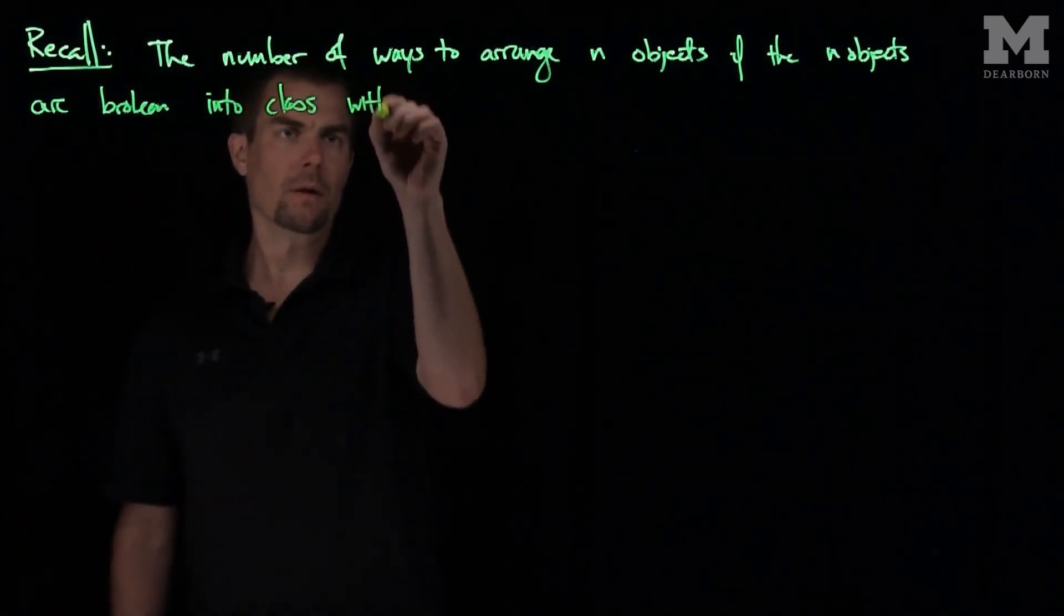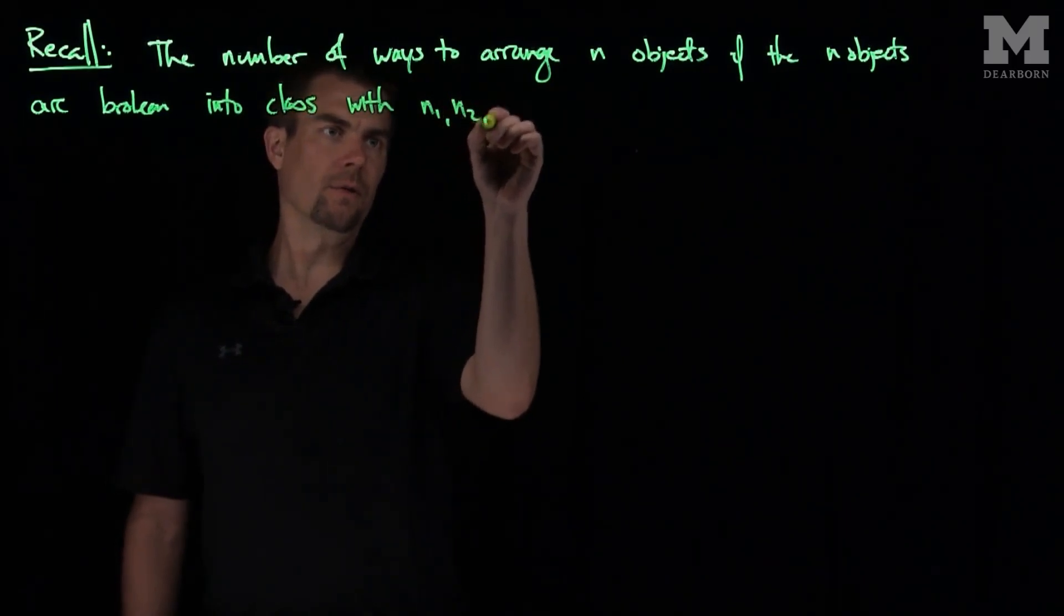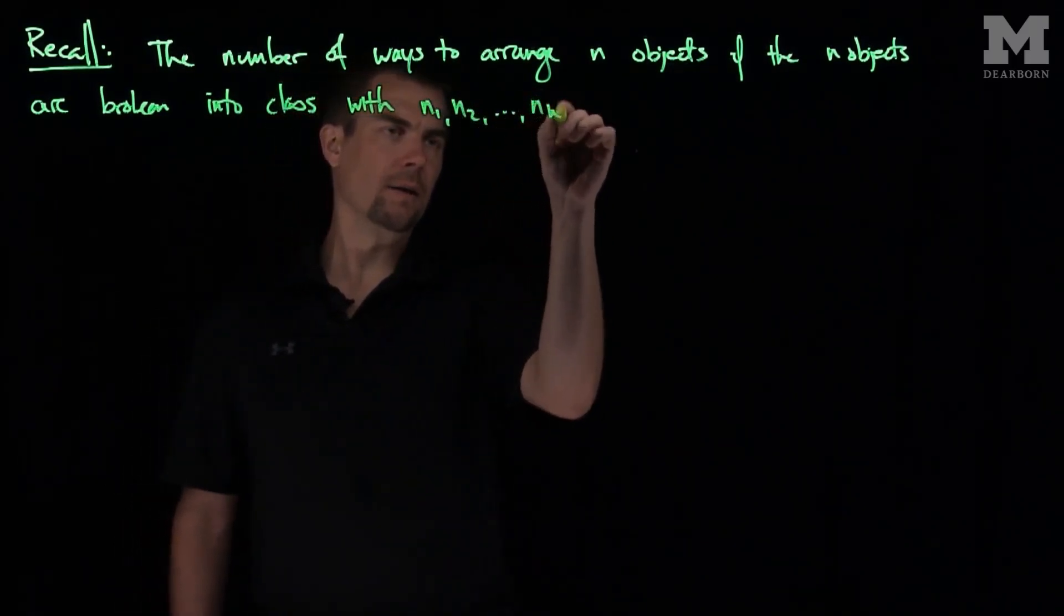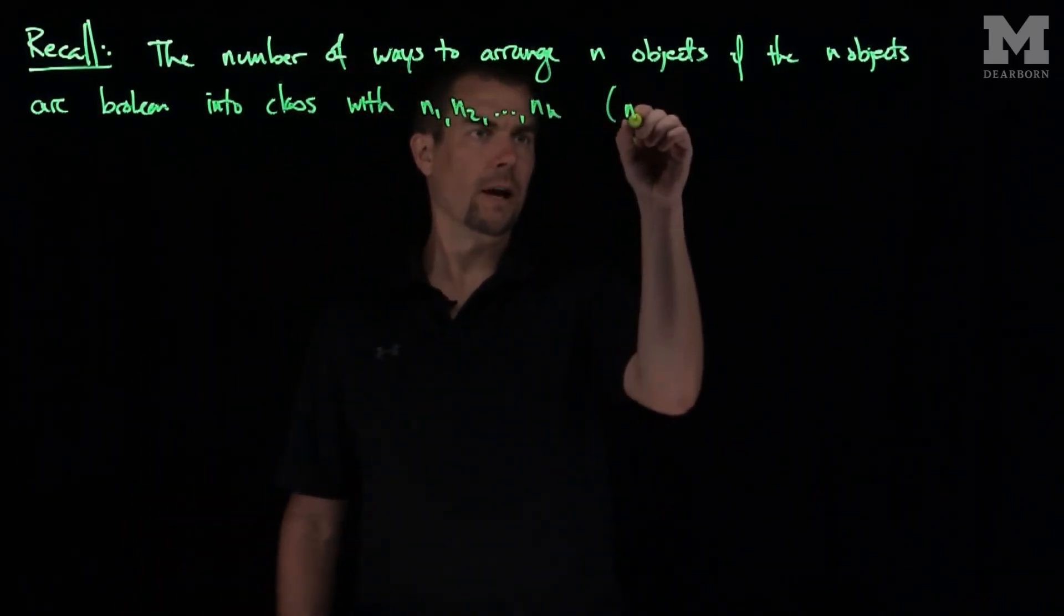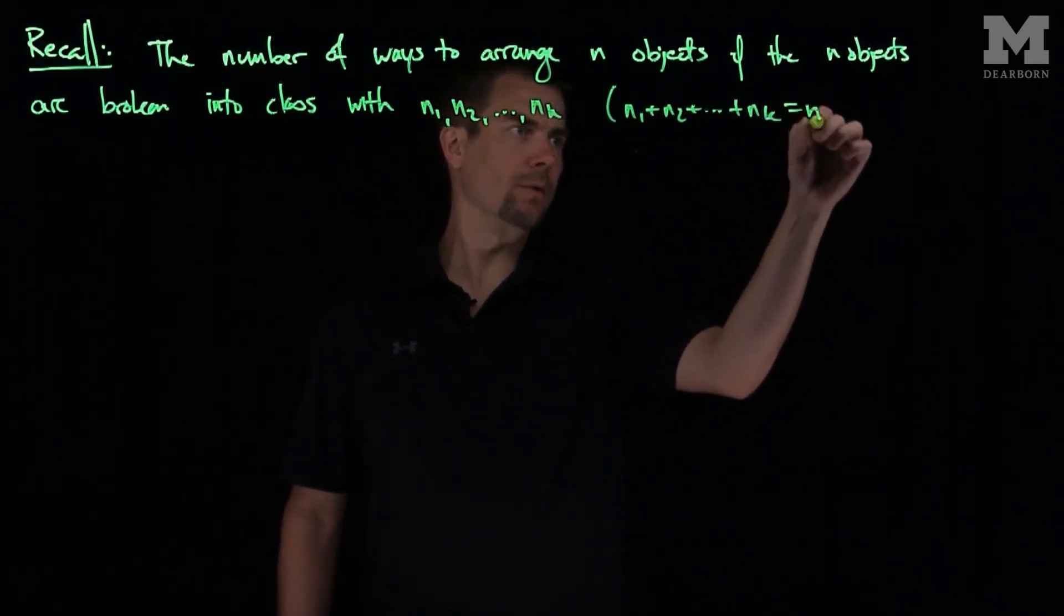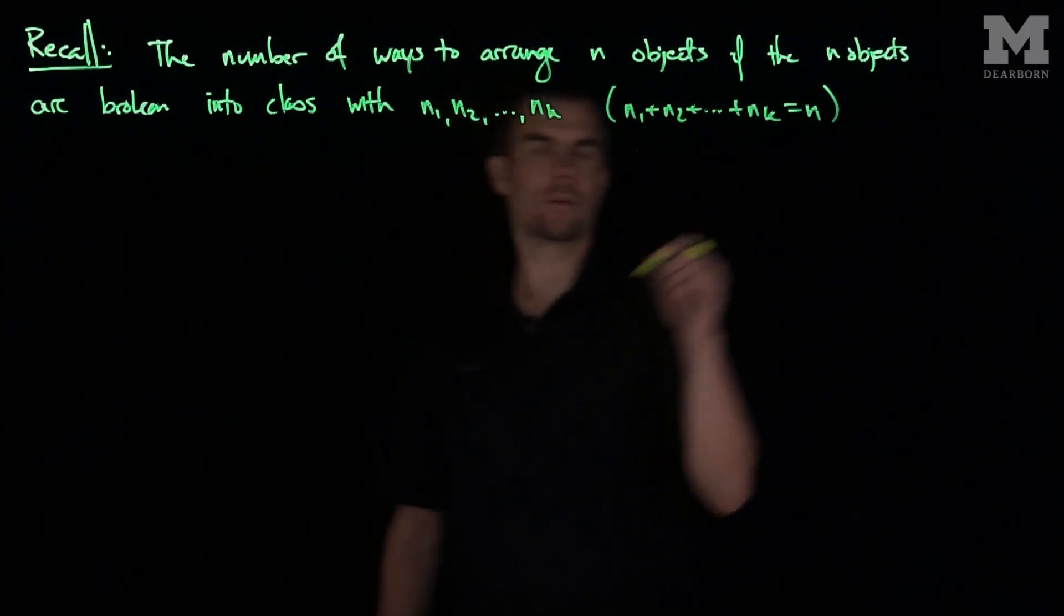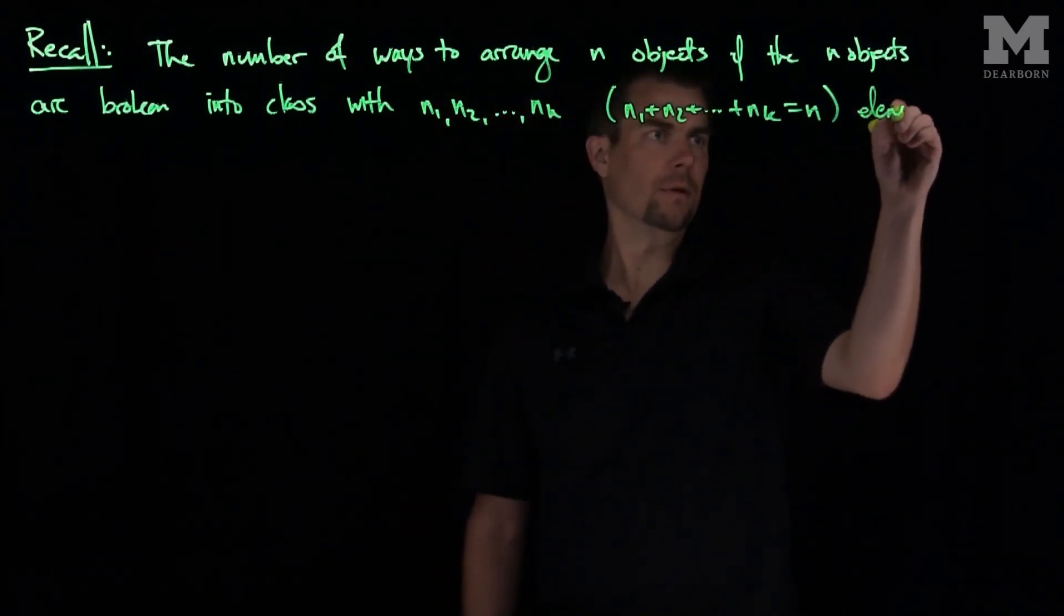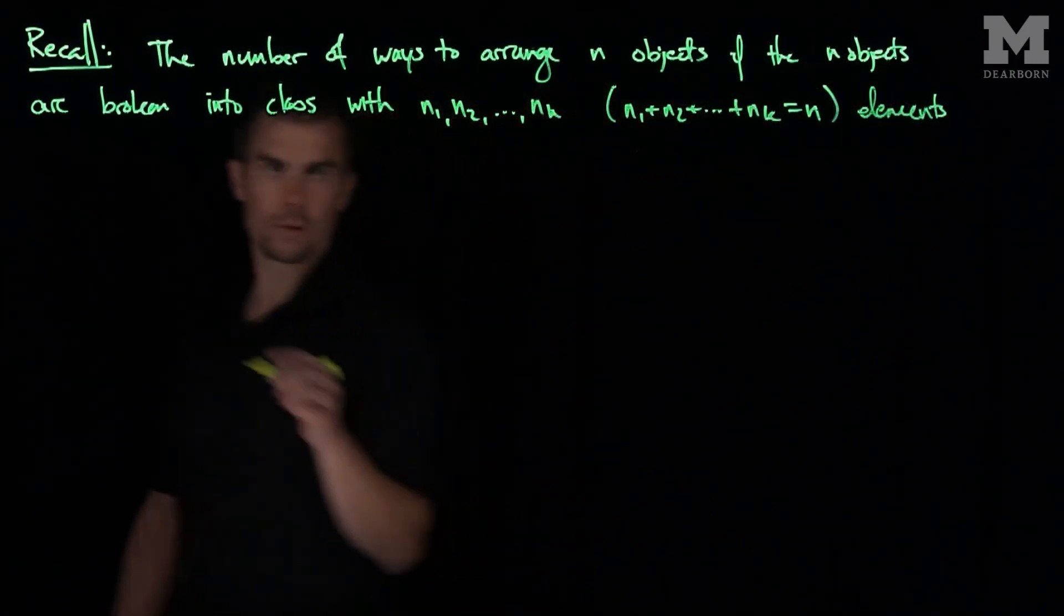With n1, n2, up to nk, where n1 plus n2 plus nk equals n elements, all indistinguishable.